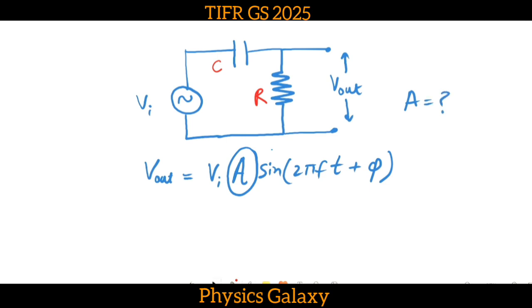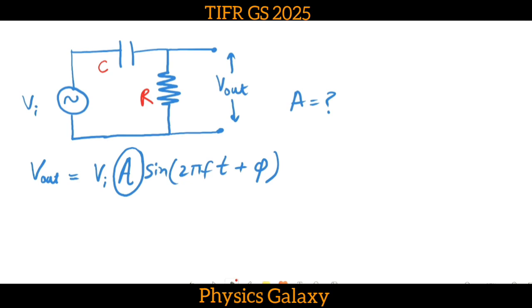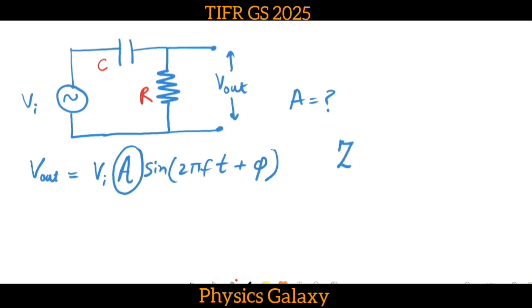This is an RC circuit. Let us write down the impedance Z. Impedance Z equals simply R plus the capacitor that is 1 by iωC. Now, 1 by iota is minus iota, so I can write Z as R minus i by ωC.